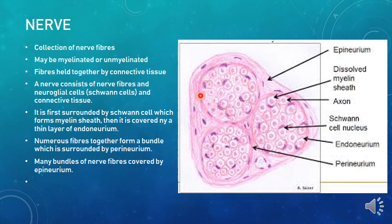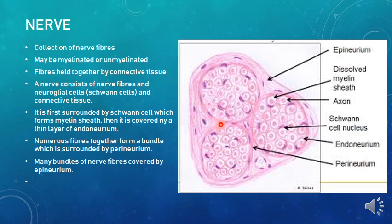When nerve fibers form a bundle, that bundle is covered by the perineurium. The perineurium is a sheath made up of around 3 to 4 layers of squamous cells - flat cells. You can see the nuclei of these flat cells in the perineurium. These cells show a basal lamina and are contractile in nature. The perineurium is also a semi-permeable membrane.